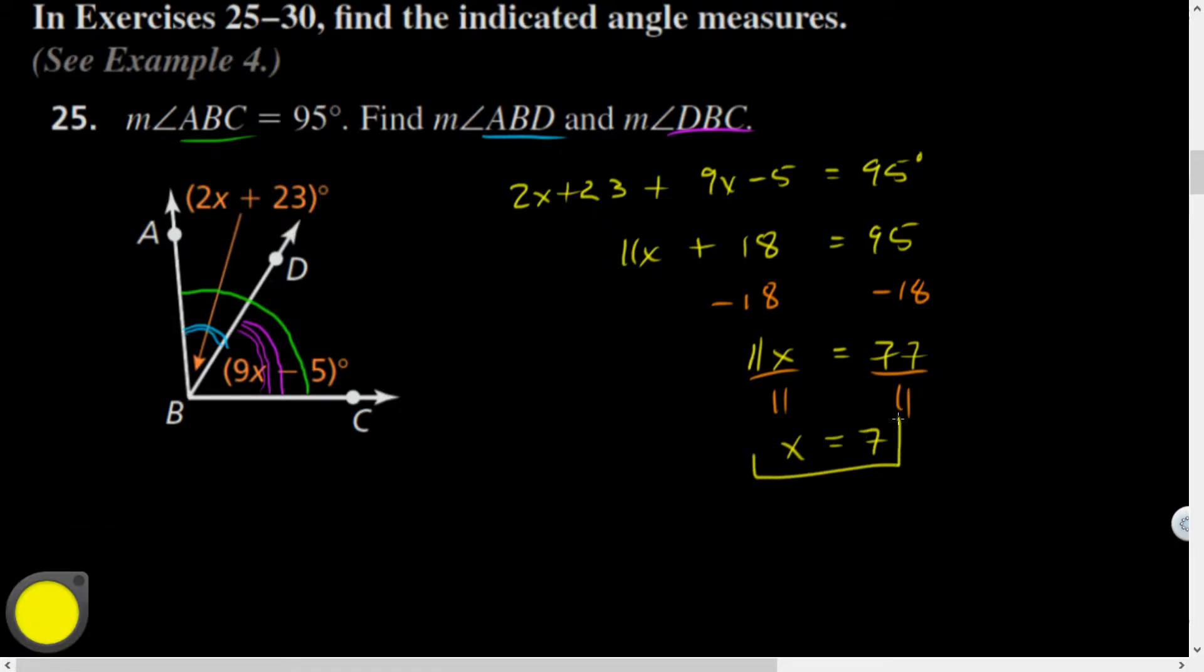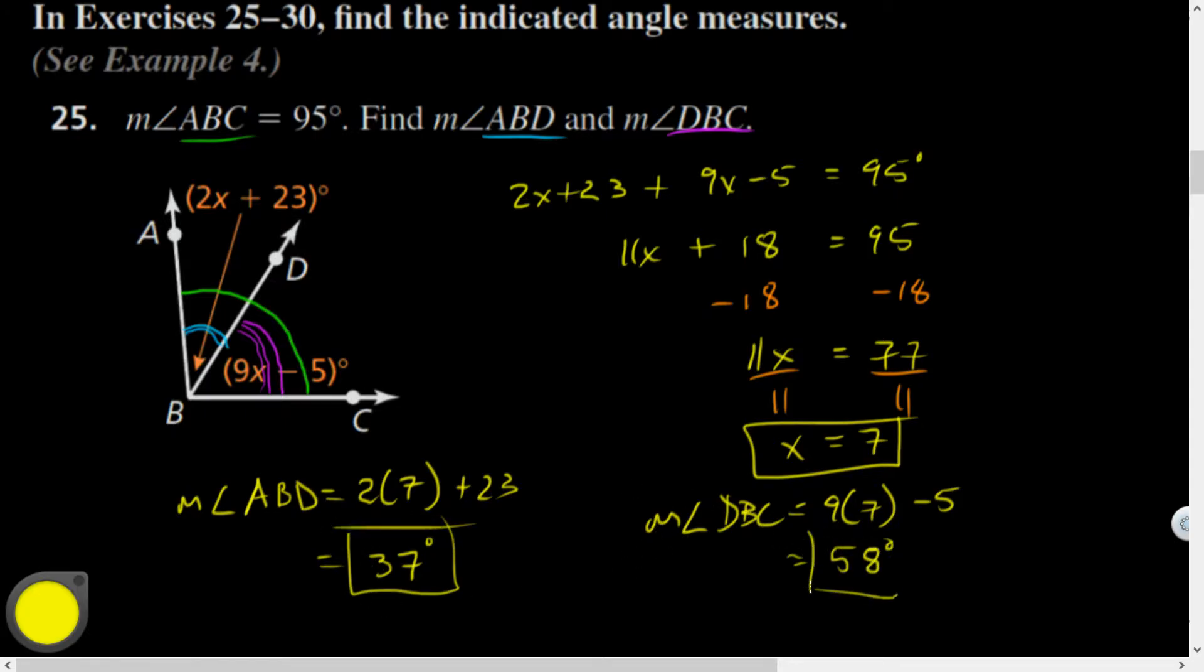But we want to know ABD and DBC, so the measure of angle ABD is 2 times 7 plus 23, which is 14 plus 23, equals 37 degrees. The other one, I could subtract 37 from 95 or plug it in. So DBC equals 9 times 7 minus 5, which is 63 minus 5, equals 58 degrees. Those are my final answers. The big idea here was the two smaller angles add up to the big angle.